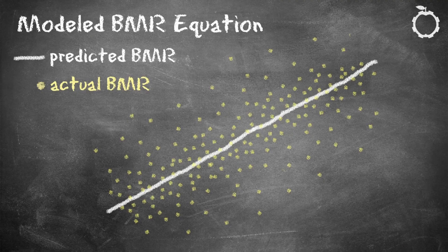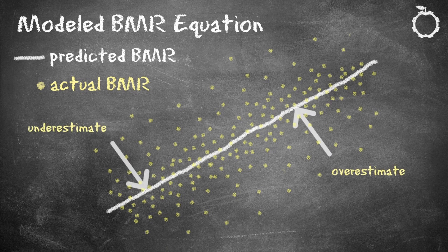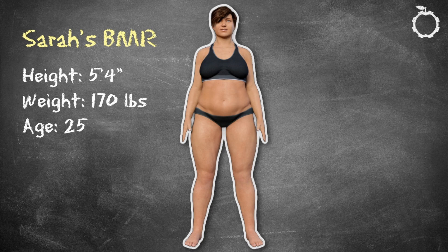Traditional BMR calculators can overestimate or underestimate how many calories you burn. The reason is that the equations assume everyone fits on the same linear trendline. So if you fall outside of the predictive model, the calorie intake recommendations are inaccurate, which could lead to a lack of results when dieting. To illustrate this problem, let's look at an example.